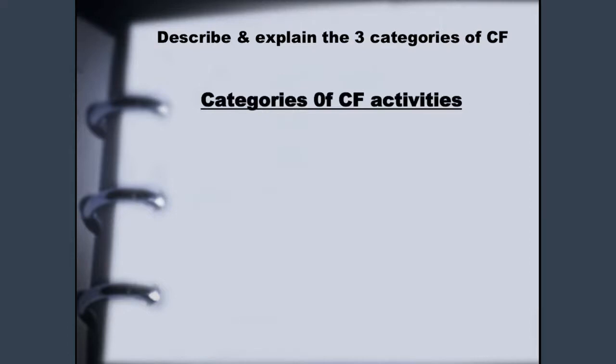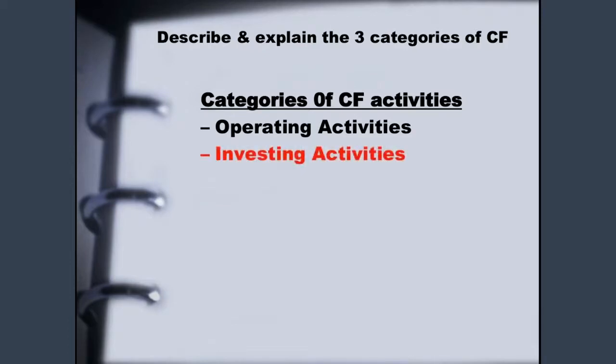Our next topic is to describe and explain the three categories of the cash flow statement. The categories are: operating activities, investing activities, and financing activities. As I said initially, our lesson focuses on the investing activity section, so we will break down this section.